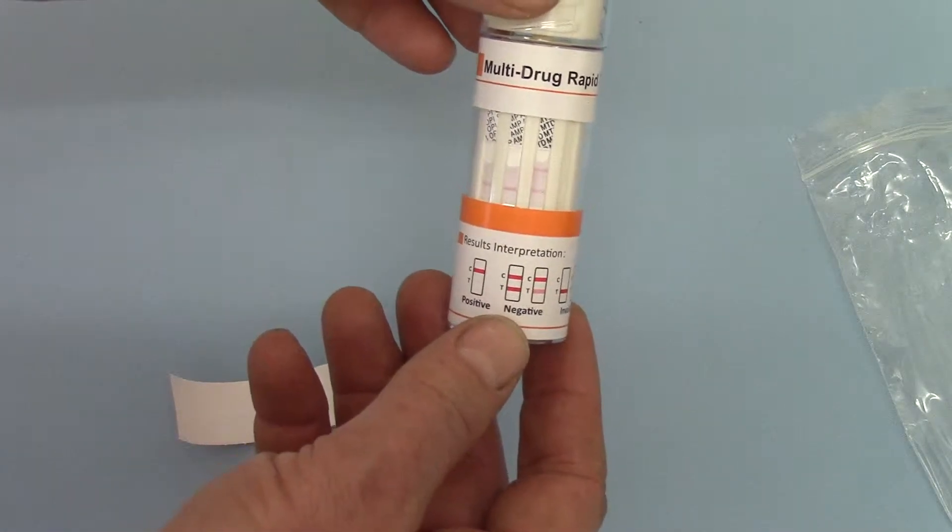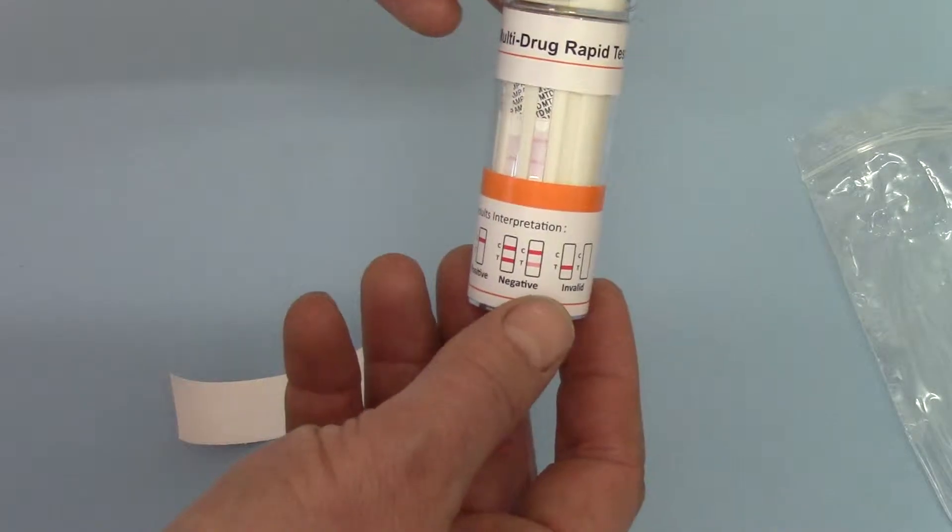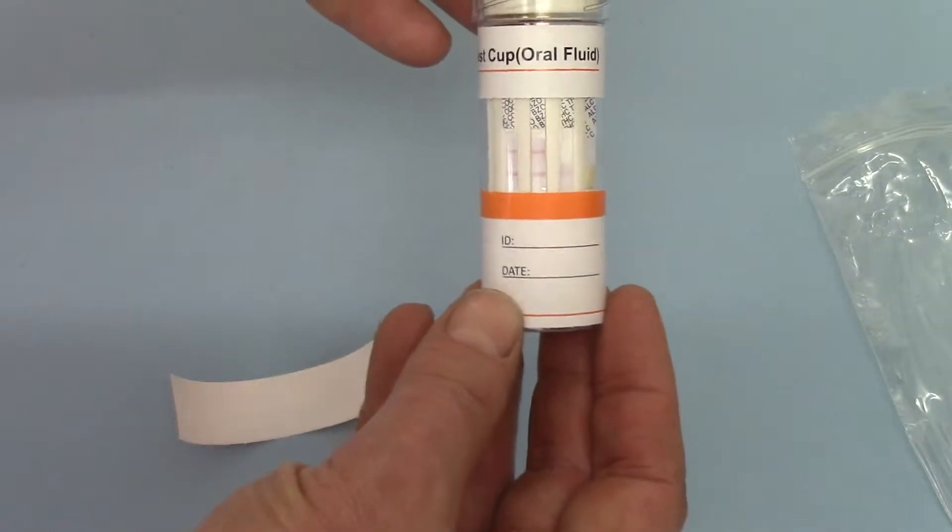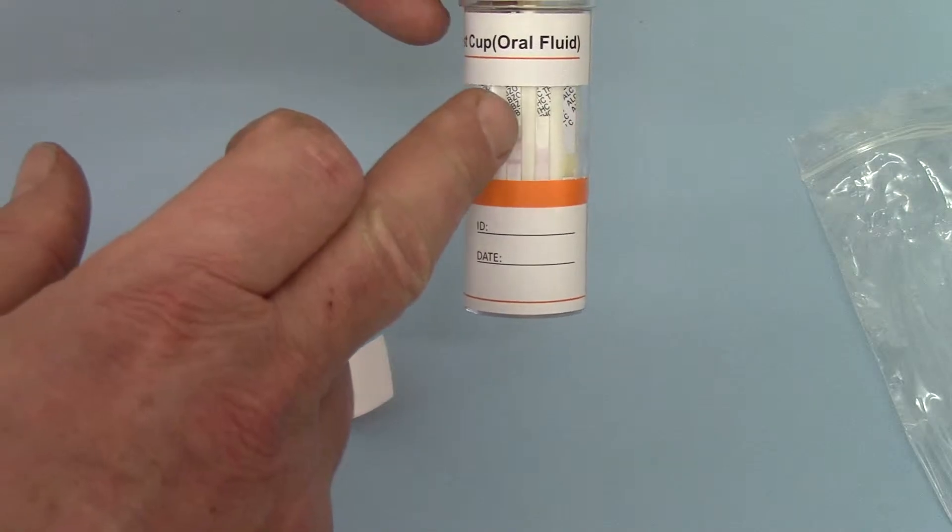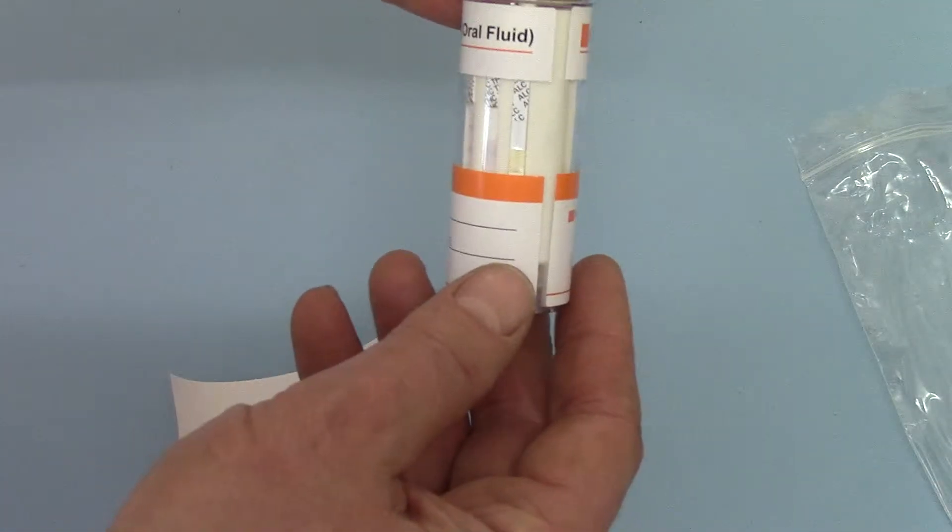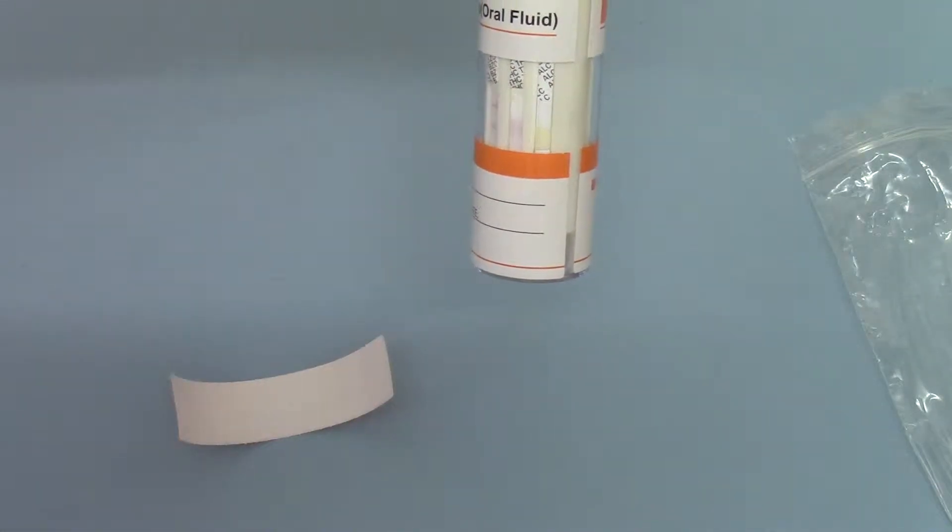So OPI for opiates, AMP for amphetamine, MTD for methadone. If we rotate round, you'll see here we have the cocaine, benzo and cannabis membranes. And on the end here, the alcohol test pad.